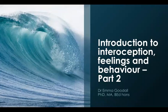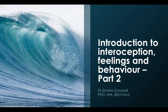In the second part of the introduction to interoception, feelings and behavior video, we're going to be looking at how the different aspects of the brain and autonomic nervous system interact to influence the experience of feelings and emotions and people's behaviors. In order to do this, it's important that we understand some of the basic functions of the brain.